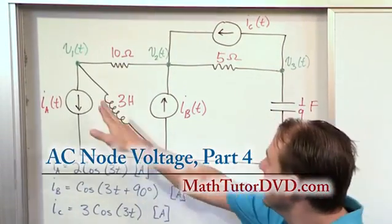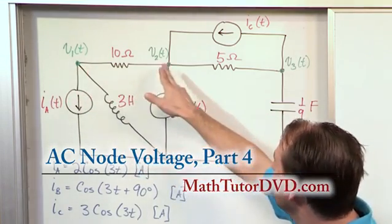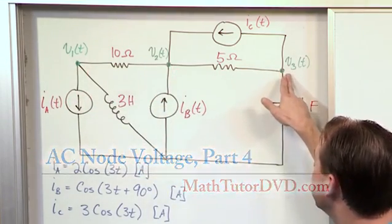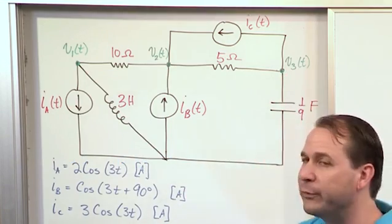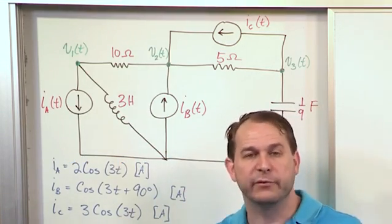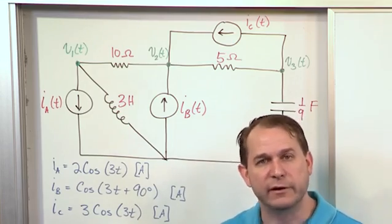Here we have a node that we care about here, a node that we care about here, and a third node that we care about here. So ultimately, we're going to write three node voltage equations. So our system of equations will be three variables, three unknowns, three equations.